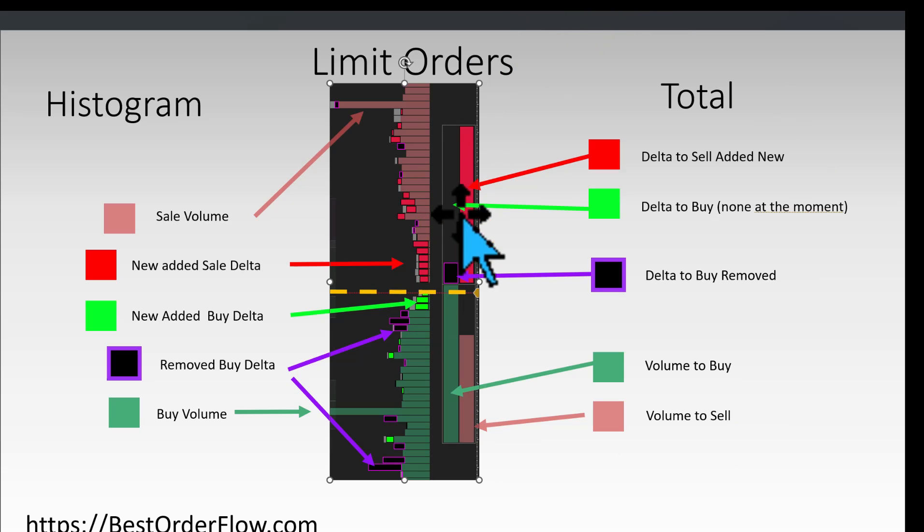Now the color codes for the totals. Bright red means delta to sell that's newly added. Bright green means delta to buy newly added. But at this moment on this chart there's none at the moment. This is delta being removed nearby price. On the lower part, this color represents volume to buy and this color represents volume to sell. We have 10 levels in total for new delta and 10 levels for totals in volume.